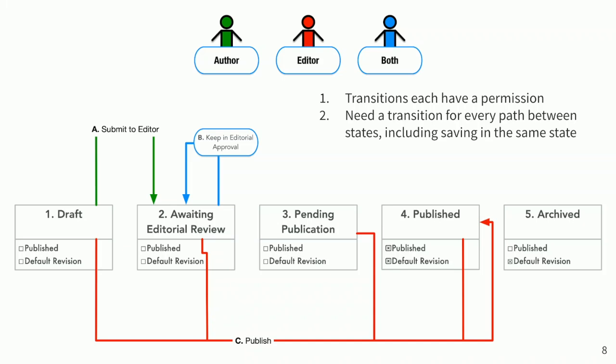The editor and author get it to the point where they feel it's ready, so the editor uses the publish transition to publish it. You've probably noticed that publish looks more complicated than the others — you can have multiple 'from' states in a transition, but only one 'to'. Publish has four 'from' states: draft, awaiting editorial review, pending publication, and published — all going to published. And the fourth thing: each from-to pair has to be unique. So since publish includes draft-to-published, you couldn't create another transition called quick publish that also goes from draft to published.